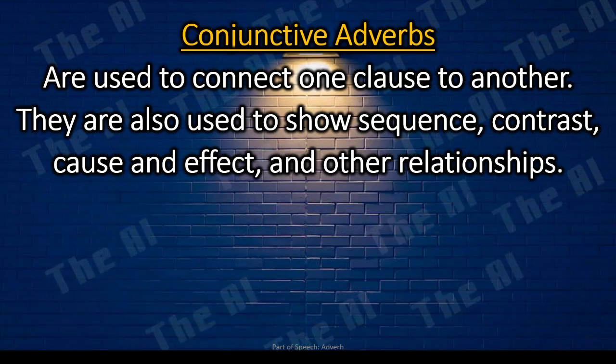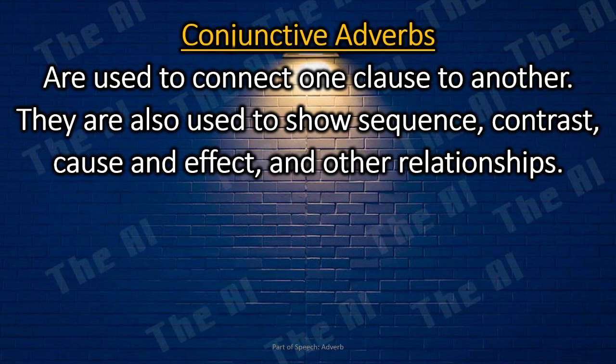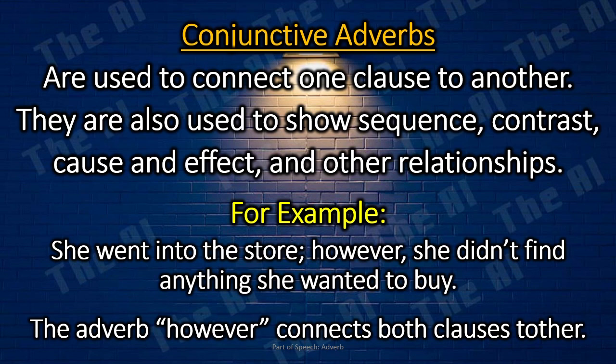The conjunctive adverbs are used to connect one clause to another. They are also used to show sequence, contrast, cause and effect, and other relationships. For example: she went into the store; however, she didn't find anything she wanted to buy. The adverb however connects both clauses together.